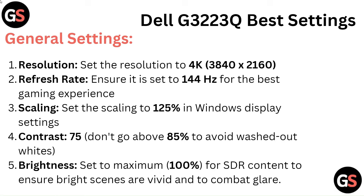Contrast: set to 75. Don't go above 85% to avoid washed out whites. Brightness: set to maximum 100% for SDR content to ensure bright scenes are vivid and to combat glare.